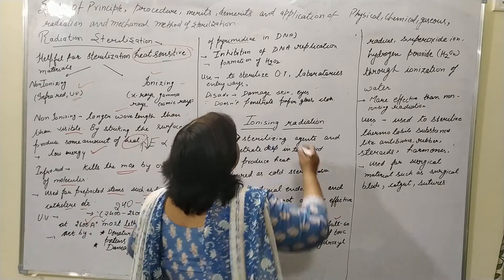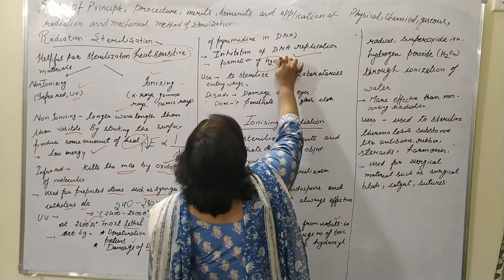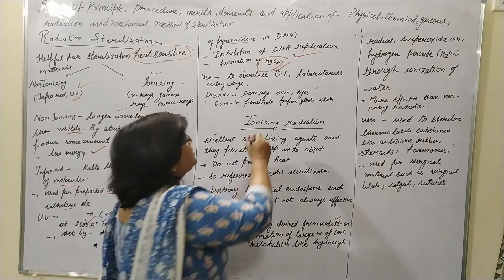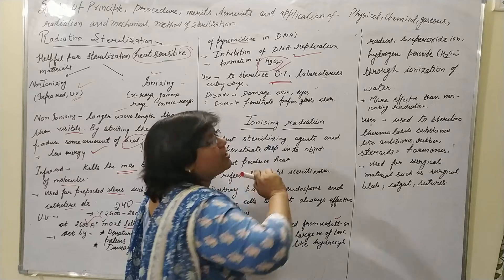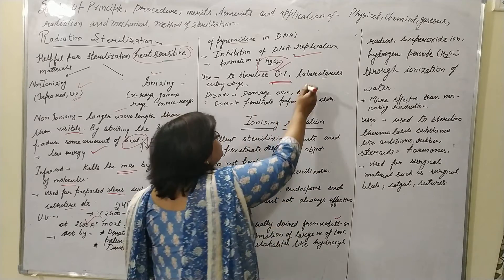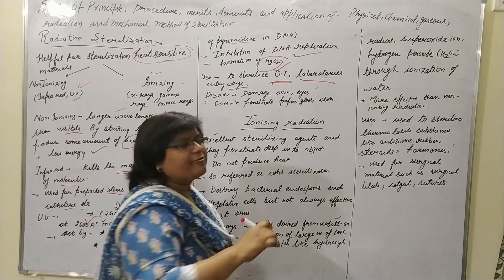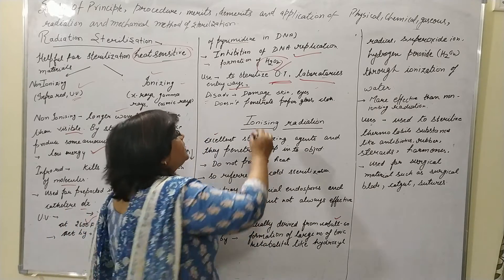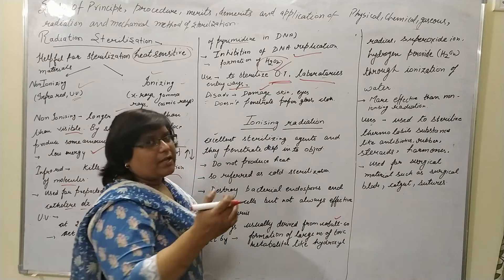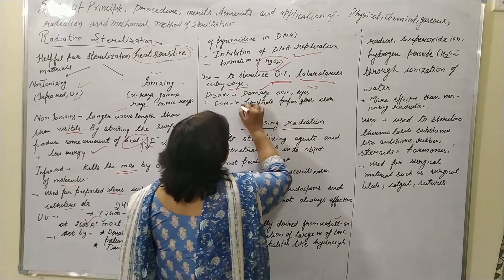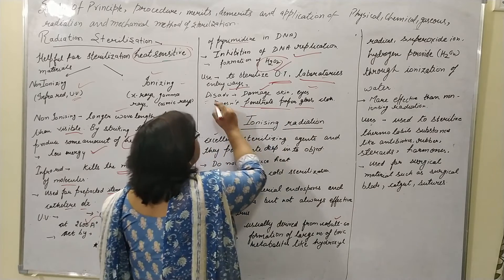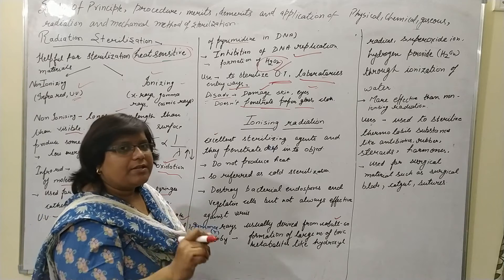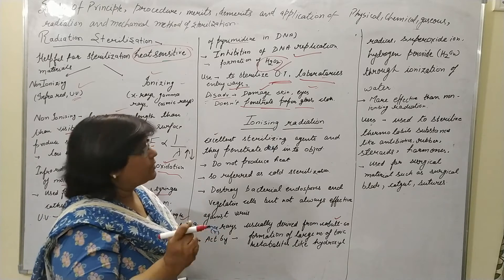UV also inhibits the DNA replication process and forms hydrogen peroxide. It is used to sterilize the OT (operation theatre), laboratories, and different kinds of entryways. However, the disadvantage is that it damages the skin and eyes, and it does not penetrate glass, paper, or cloth.